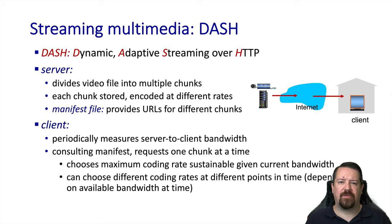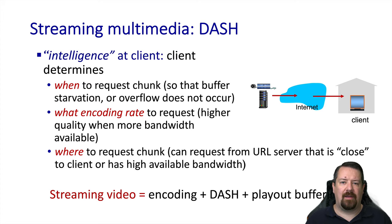For DASH to work, the server needs to store multiple copies of the video file encoded at different bitrates. The client is then provided with the URLs for these different chunks at different bitrates. As the file is being streamed, the client can measure the rate at which it is receiving data and request higher or lower bitrates for future chunks as appropriate. The client software wants to show the best quality the network connection can support, except where the user has selected lower quality to save bandwidth. Much of the intelligence for this process is stored in the client, which improves scalability. The client determines when to request the next chunk, what bitrate to request, and it may also have multiple server options to request it from.